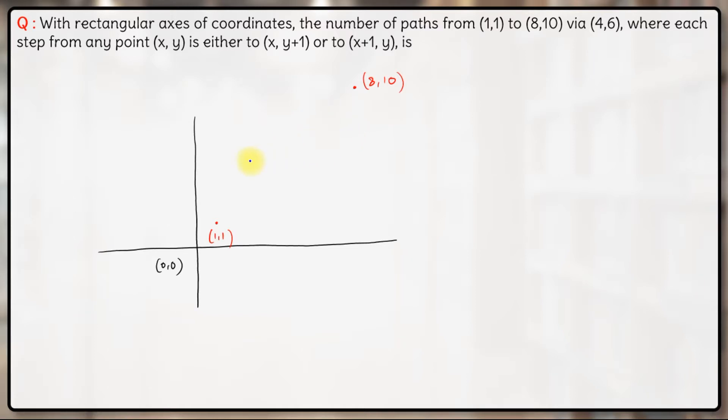So for that, let us do one thing. Let us draw a rectangular matrix involving these two coordinates. Now this is the line where x is equal to 1, and this is the line where x is equal to 8. So we will have x equals to 2, 3, 4, 5, 6, 7. All these lines will be there. So let us draw these lines. Obviously these will extend, but we have to consider only the lines within the box, no need to extend it.